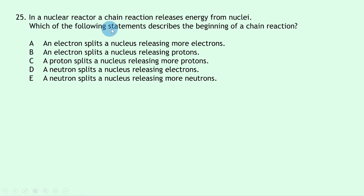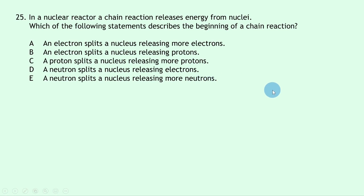Question 25: in a nuclear reactor a chain reaction releases energy. A chain reaction involves induced nuclear fission — a neutron strikes a nucleus. This eliminates electron and proton options. Between D and E, the chain reaction requires neutrons (not electrons) to be released and go on to split further nuclei. The answer is E: a neutron splits a nucleus releasing more neutrons.